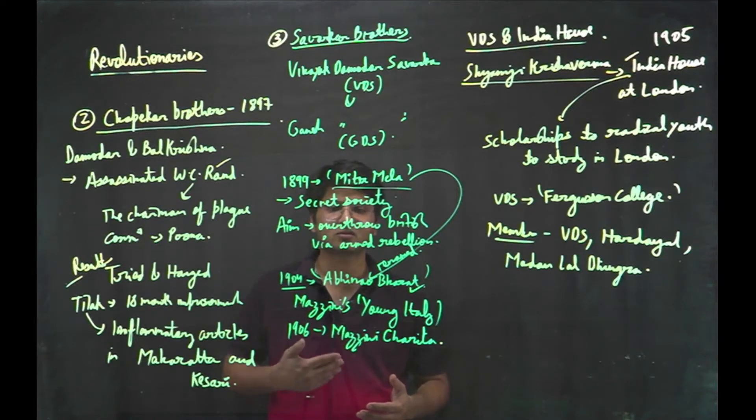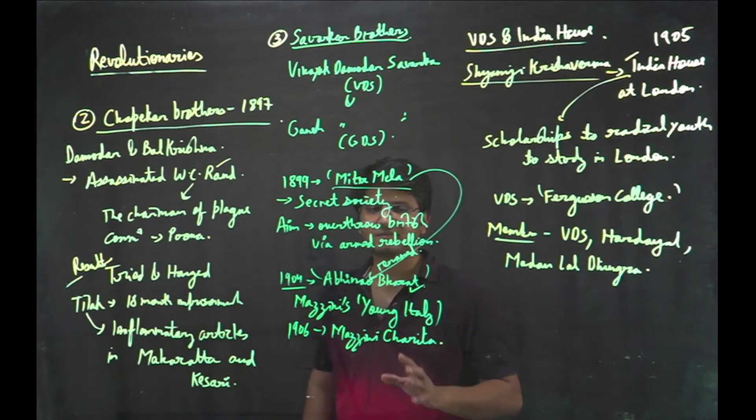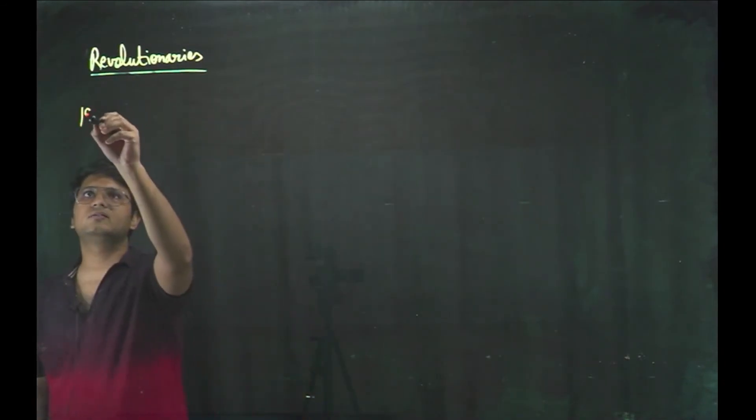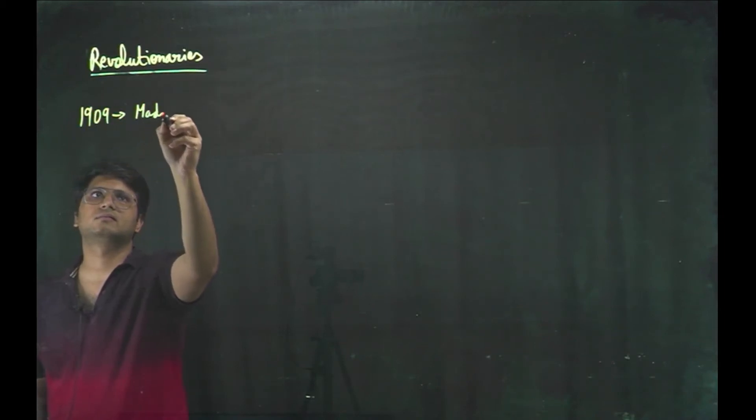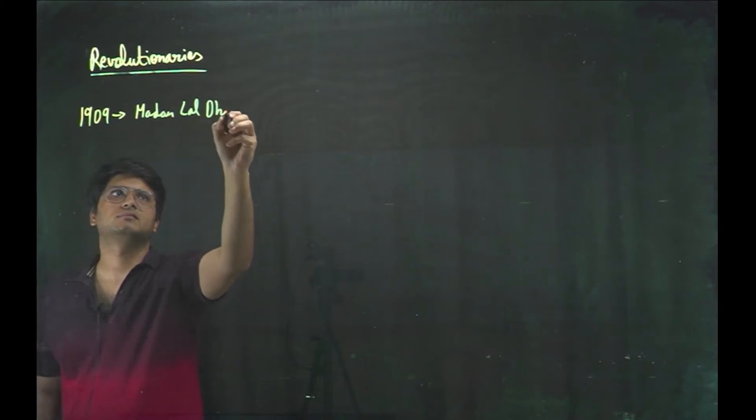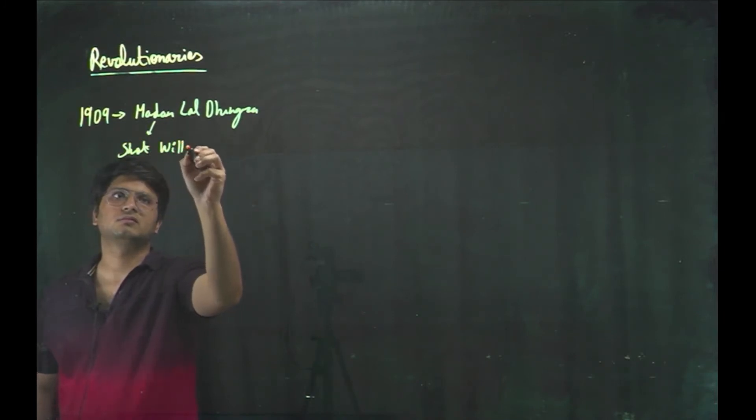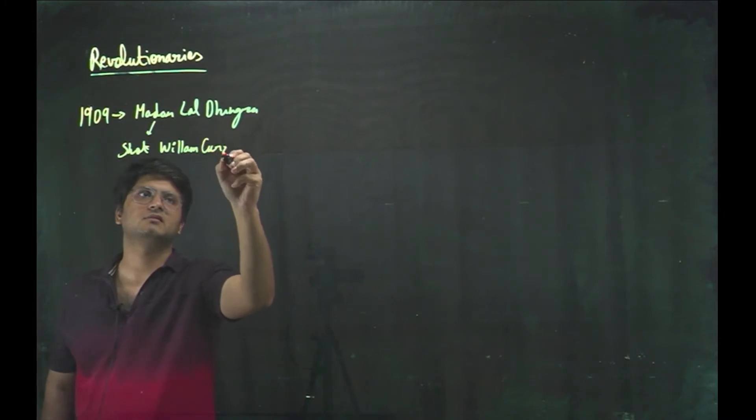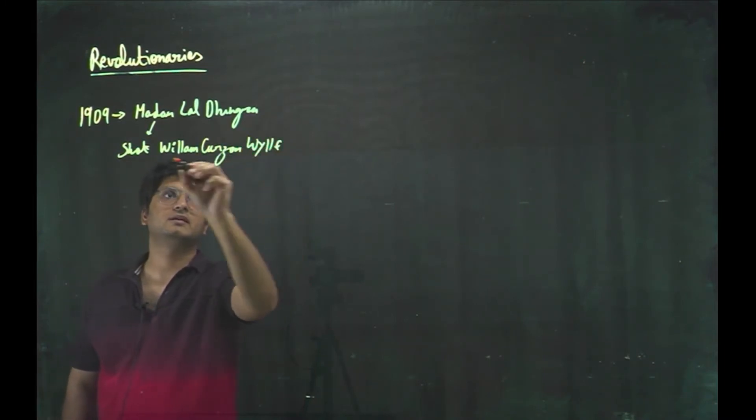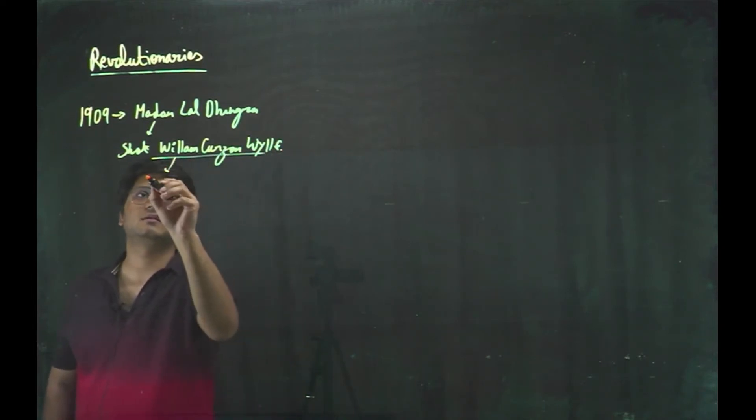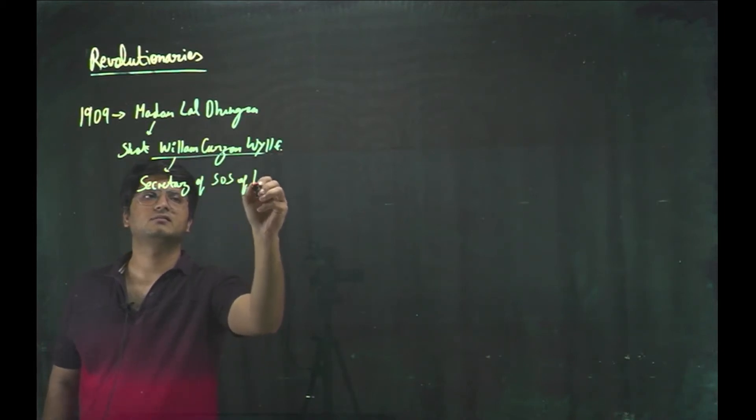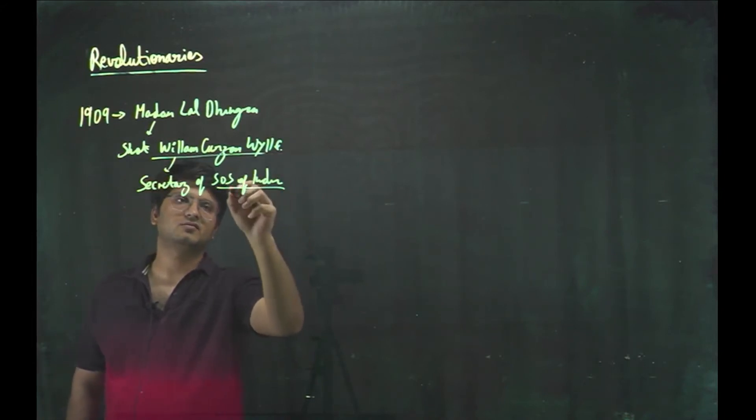And he also published a book, the Indian War of Independence. In that book, he considered 1857 revolt as first war of independence. In 1909, Madan Lal Dingra shot William Curzon Wiley. He was the Secretary of State of India, Secretary of that Secretary of State of India. He killed that man.